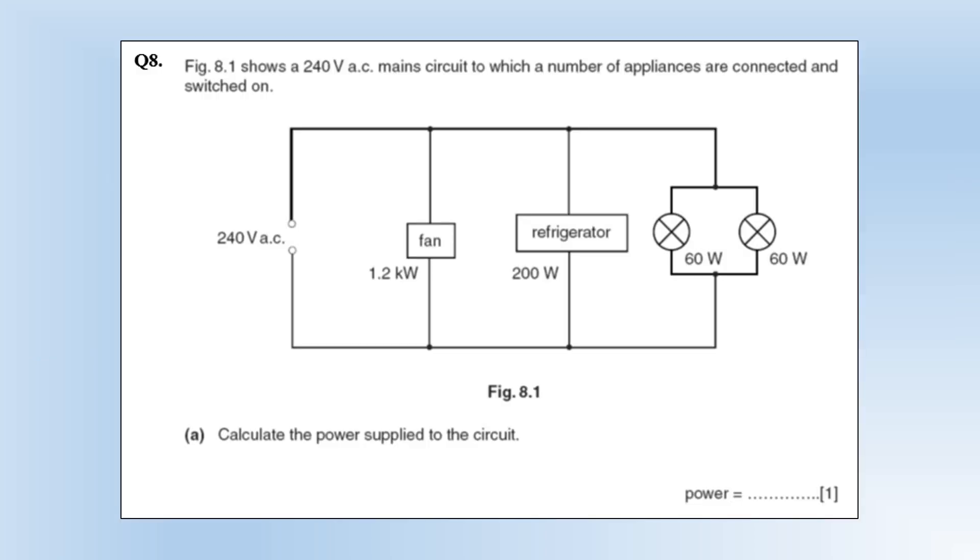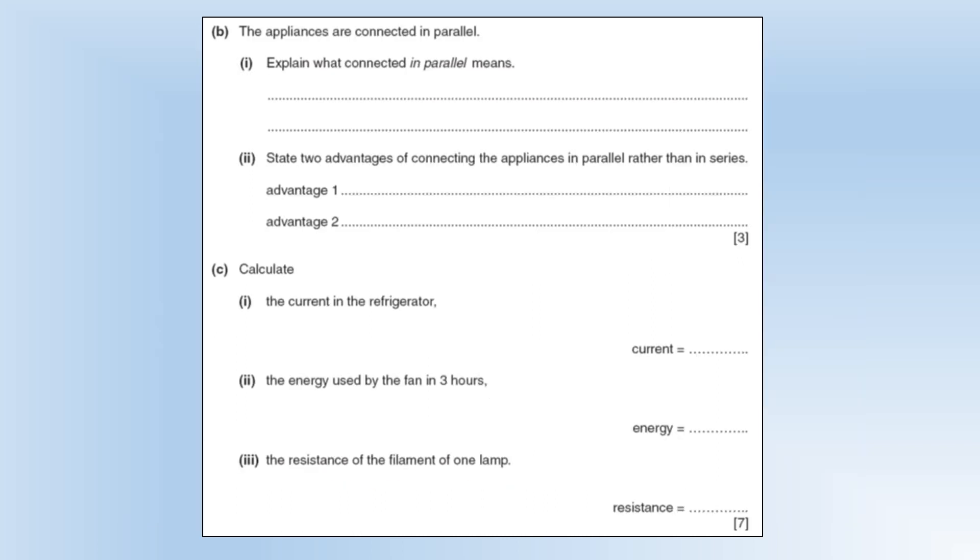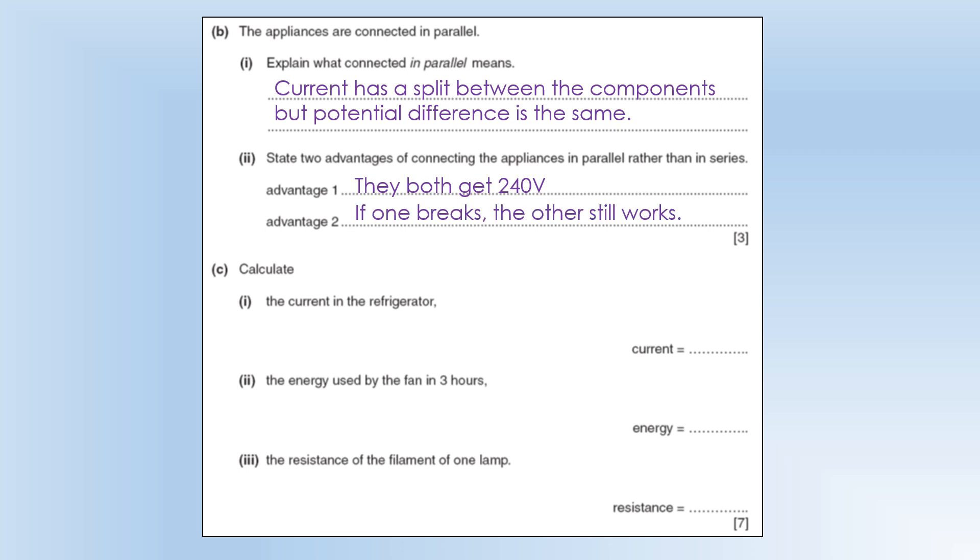The diagram shows a 240 volt AC main circuit which a number of appliances are connected and switched on. They're all in parallel with each other. So they've all got a potential difference of 240. Calculate the power supply to the circuit. Well we just need to add the four powers together. Giving us 1520 watts. So the appliances are connected in parallel. Explain what that means. Well it means the current has to split between the components. But the potential difference across them is going to be the same. Two advantages of connecting the appliances in parallel rather than in series. So they both get 240 volts potential difference. And if one breaks the other still works.